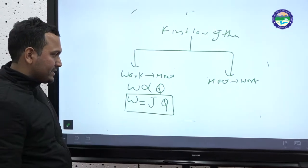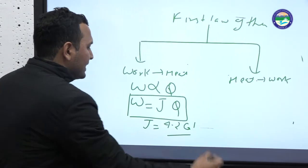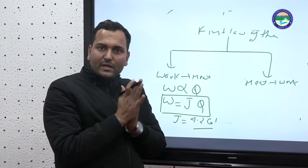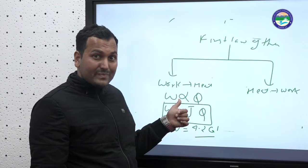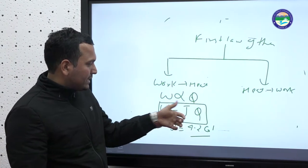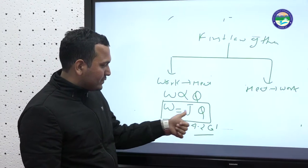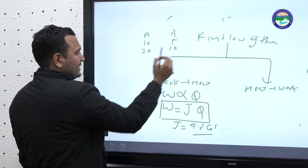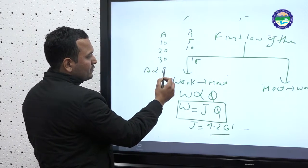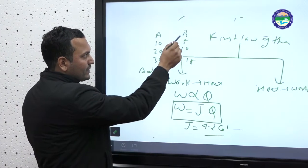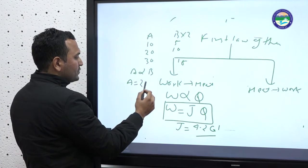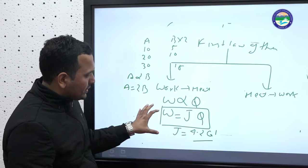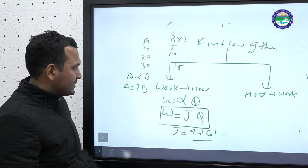J is the Joule equivalent and its value is 4.2 Joules per calorie. So W = JQ is the first statement: if you perform mechanical work, heat is produced, and the mechanical work is directly proportional to the heat produced. For equivalence we use J as a constant, so W = JQ. For example, if A is proportional to B but not equal, we multiply by a constant — here J plays that role for W and Q.